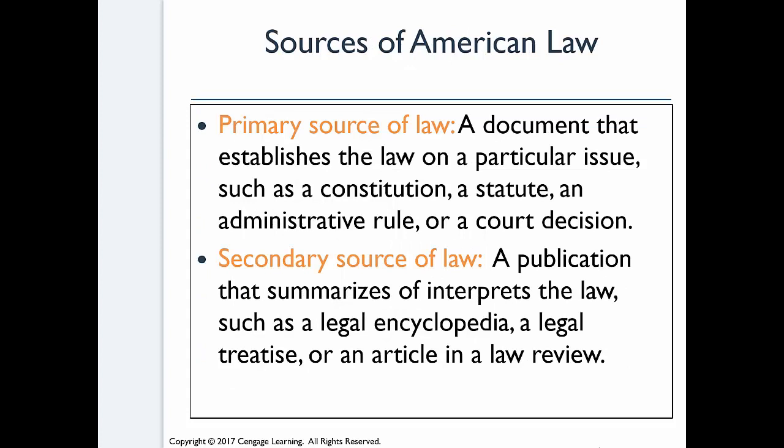Let's dive into the sources of American law. There are two versions: primary sources and secondary sources. A primary source of law is a document that establishes the law on a particular issue — that can be a constitution, a statute, an administrative rule, or a court decision. Secondary sources are publications that summarize or interpret the law, like a legal encyclopedia or an article in a law review. Courts often look at secondary sources if an issue hasn't come up before them in the past.